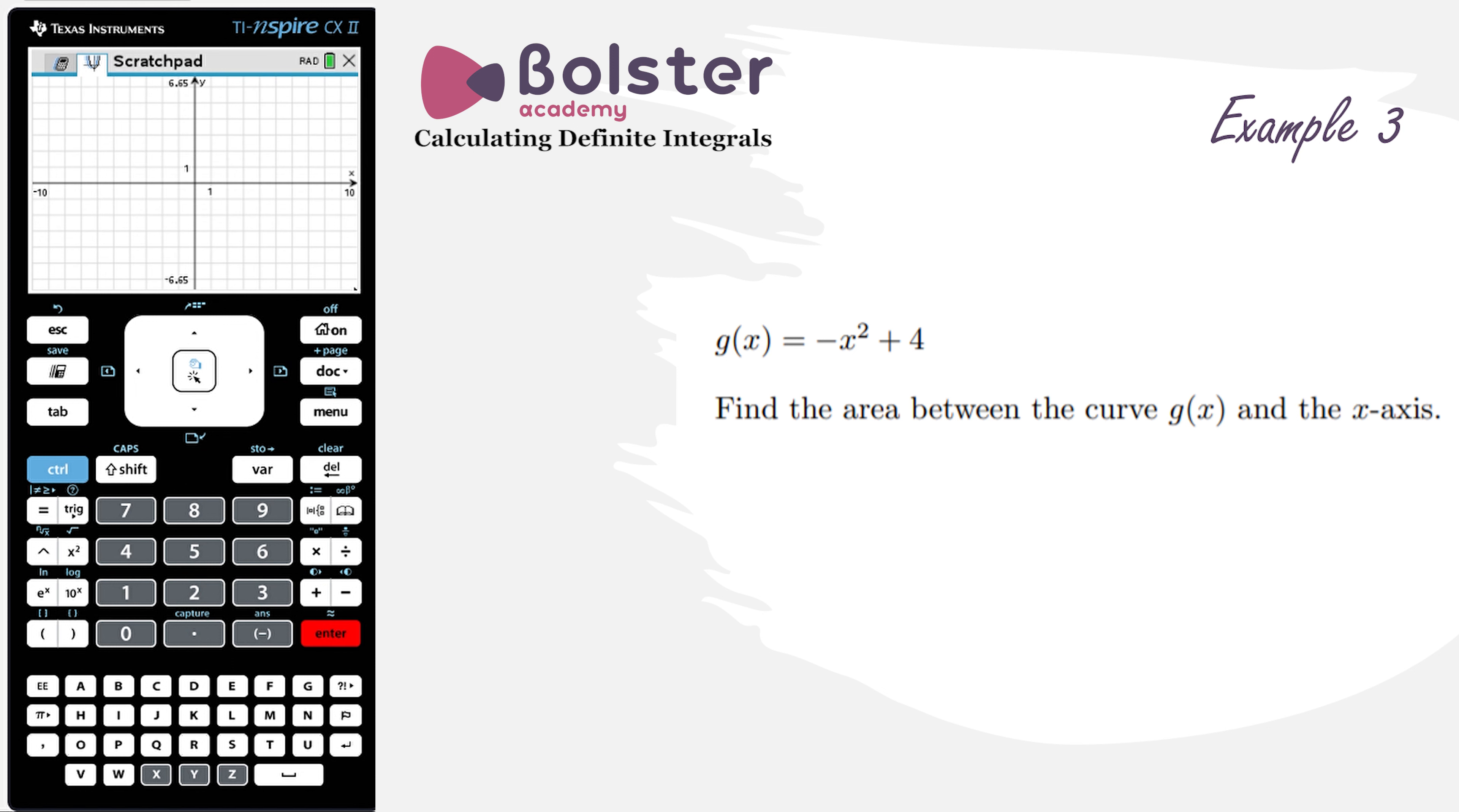Yeah, we want to delete everything, because it's a nice clean display to work with. So we're going to hit tab to type in our new function, and it's going to be minus x squared plus 4. I graph that, and there is the graph of the function that I'm looking for.